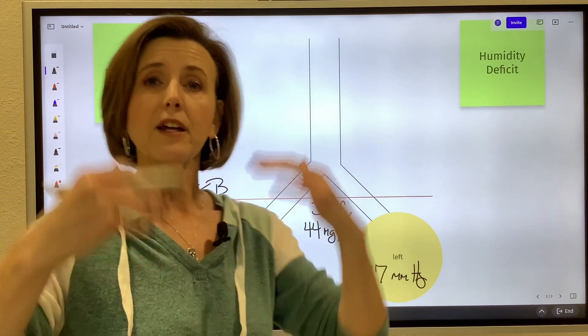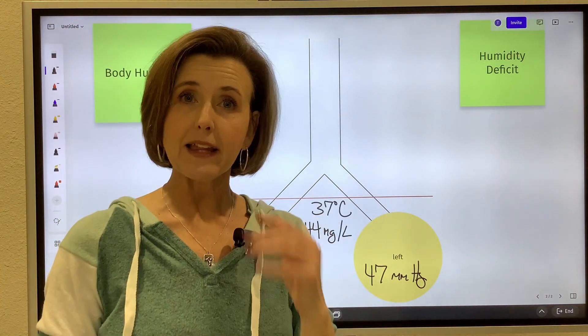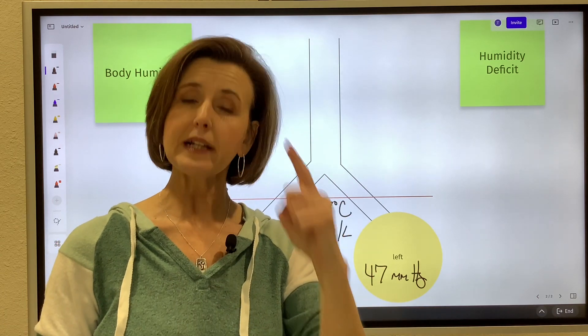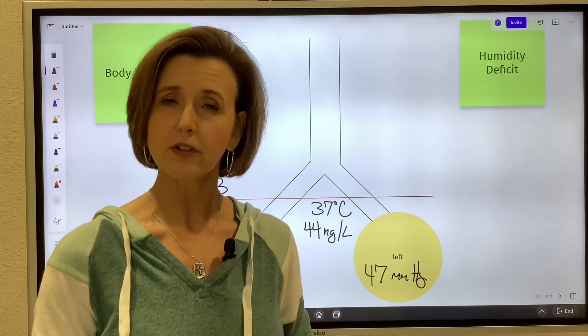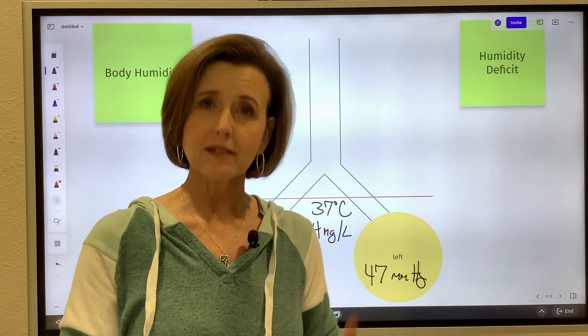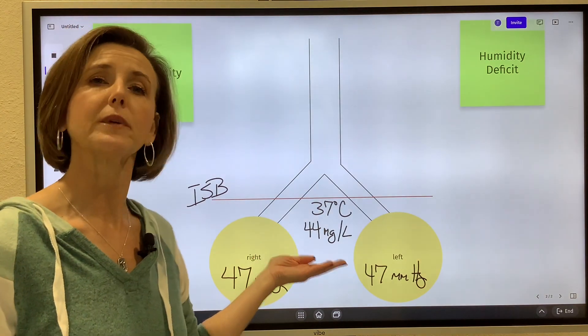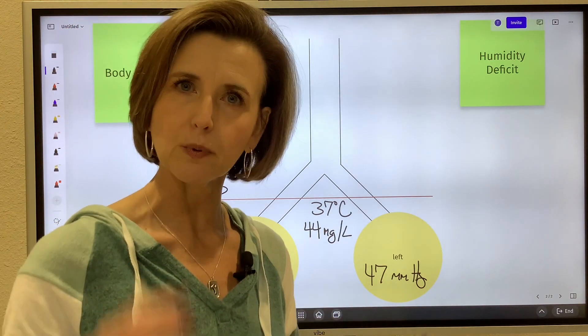Real quick recap: we breathe in, the air we breathe in travels down the airway until it hits the ISB, and at that point it is completely warm to body temperature, 37 degrees, and it's fully 100% saturated with water vapor. That water vapor weighs 44 milligrams per liter. Pretty simple, right?